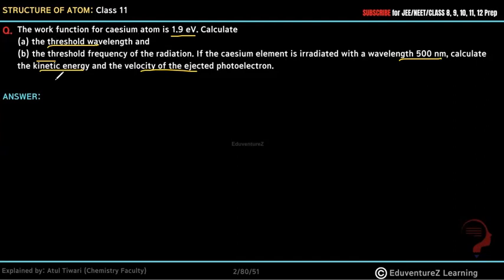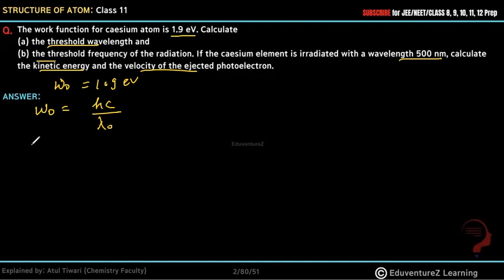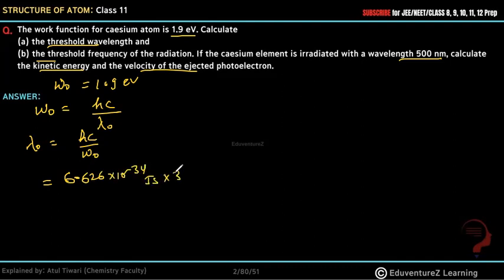So first, we have the work function of cesium, W₀ = 1.9 electron volt. To get the threshold wavelength, we use the expression: λ₀ = hc / W₀. Here, h = 6.626 × 10⁻³⁴ Joule·second and c = 3 × 10⁸ meter per second.